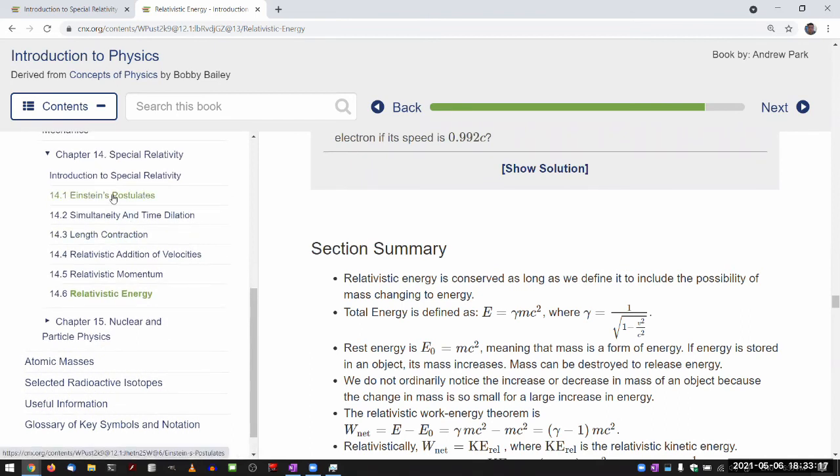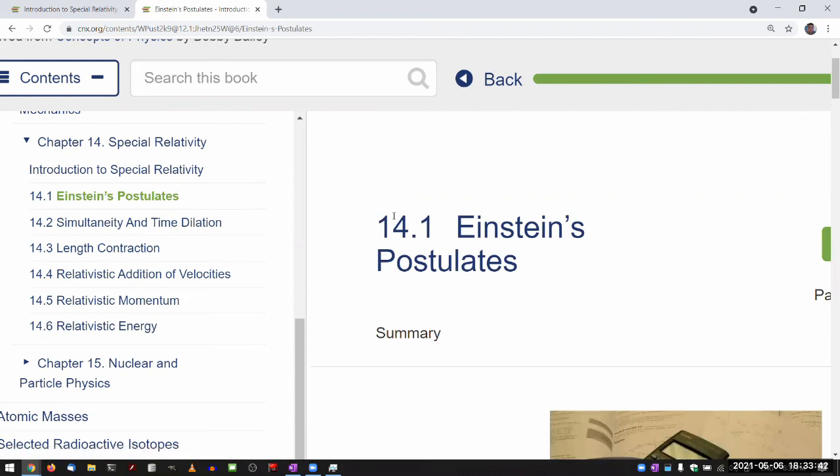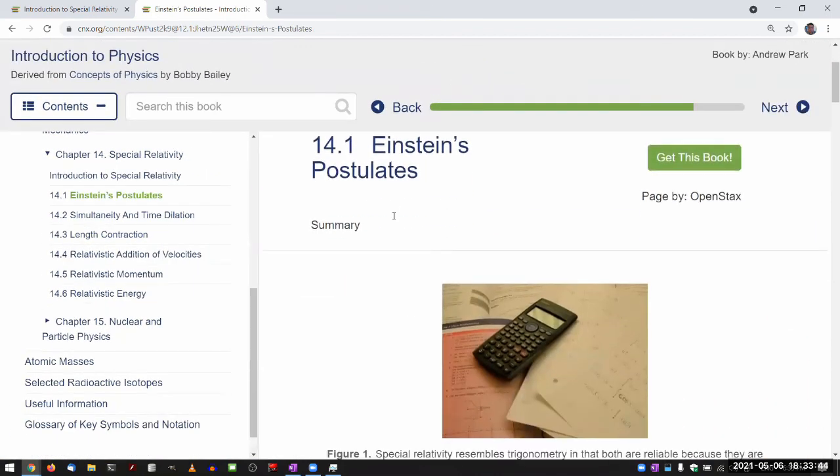So that's the chapter overview of chapter 14. The first section introduces the Einstein's two postulates of special relativity. And we talk about some of their consequences, especially as they relate to kinematics. And then the last two sections modify our established ideas of momentum and energy so that they are consistent with Einstein's two postulates of special relativity. Okay, so that's chapter overview.